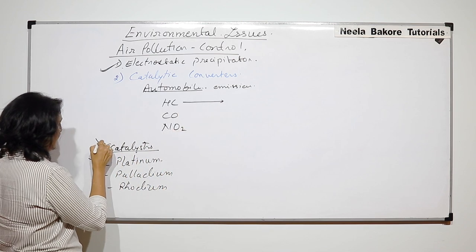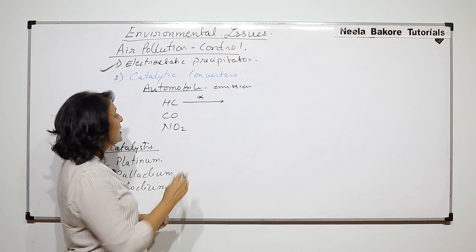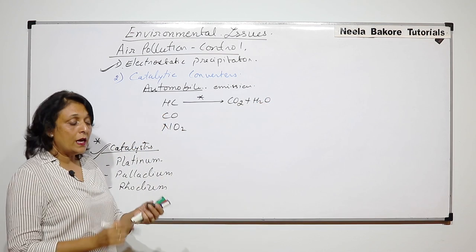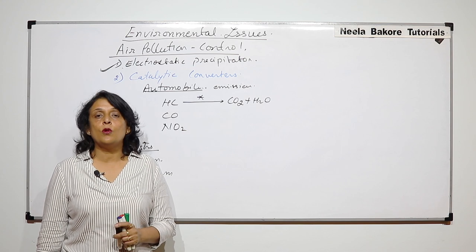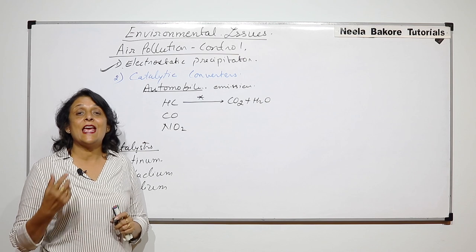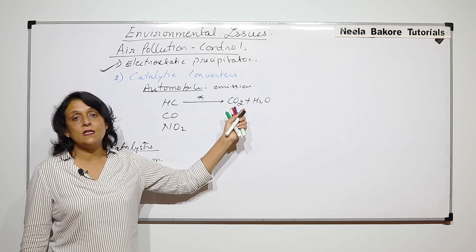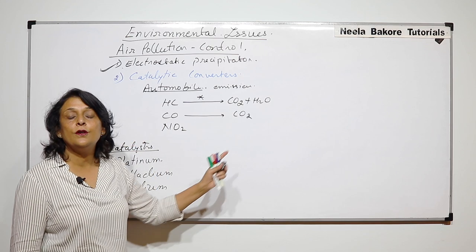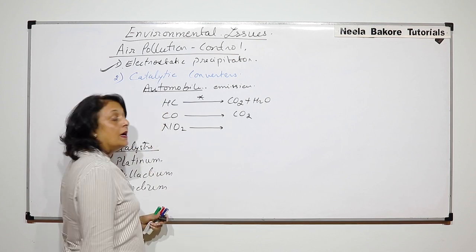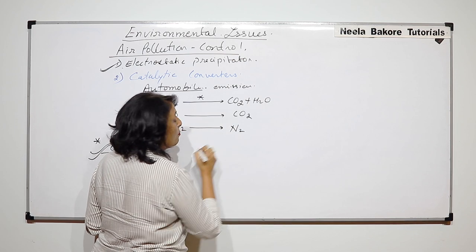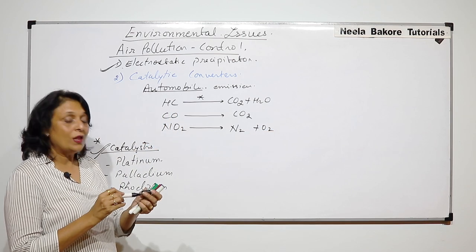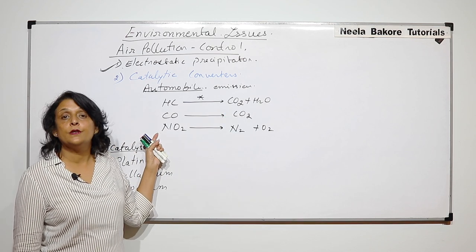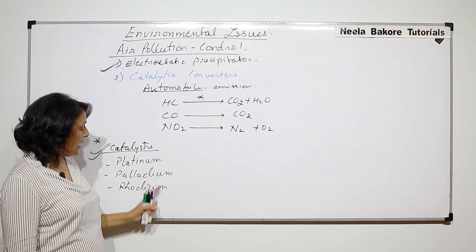In the presence of these catalysts, the hydrocarbons are converted into carbon dioxide and water. So if these catalytic converters are installed in automobiles, all the hydrocarbons produced will be converted into harmless substances like CO2 and water. Carbon monoxide will be converted into carbon dioxide, and oxides of nitrogen will be converted into molecular nitrogen and oxygen. So all these harmful pollutants are converted into harmless substances.